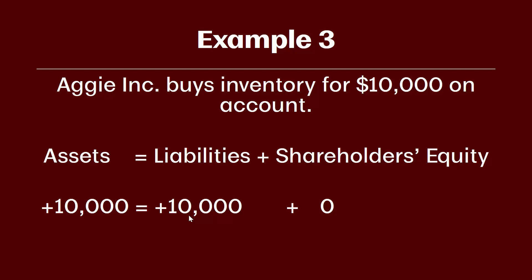Accounts payable is specifically dedicated to the purchase of inventory on credit — if we bought a building, we'd call that a different kind of liability. We've already covered these concepts in other videos: inventory in the asset videos and accounts payable in the liability videos. These transactions are just helping us bring all those concepts together. If you find yourself a little lost, you may need to go back and review previous videos. The key focus here is that the accounting equation balances: we increased assets for inventory and increased liabilities for accounts payable.